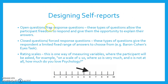Open questions: these type of questions allow the participant freedom to respond and give them the opportunity to explain their answers. Closed questions: these type of questions give the respondent a limited range of answers to choose from, and this was the case in Baron Cohen's eyes task.